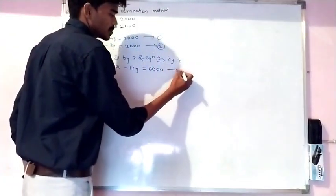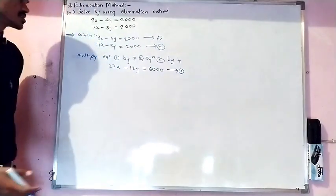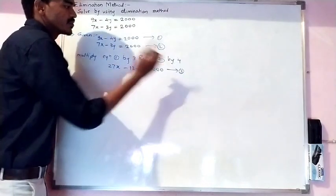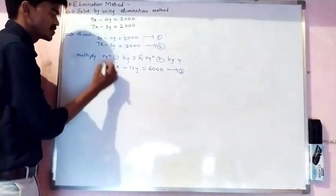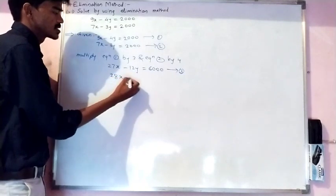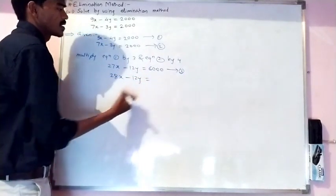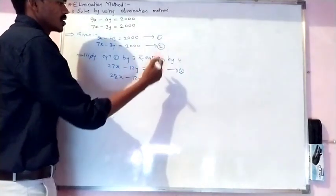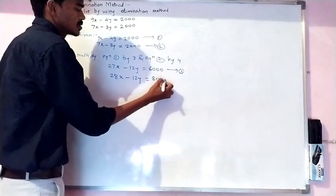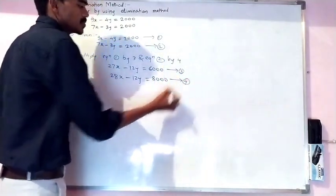Now we multiply equation 2 by 4: 7 times 4 gives 28x, minus 3 times 4 gives 12y, equals 4 times 2000 which is 8000. We call this equation 4.